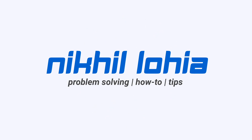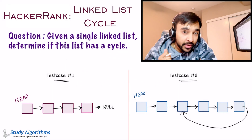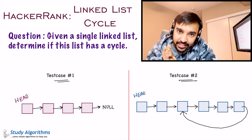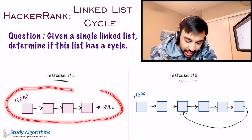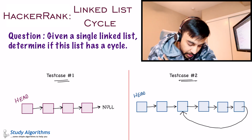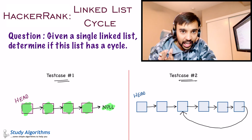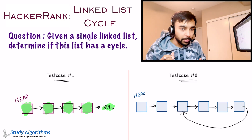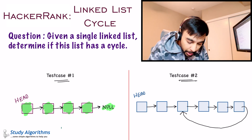Without further ado, let's get started. Let us first make sure that we understand the problem statement correctly. Let us look at test case number one. This is a sample of a very general linked list. When you try to traverse this list, you start from the head pointer, then go to the next pointer, then do a next again, and again, until you reach null. This is where you stop. So this list doesn't have any cycle, and you simply print out no on the screen.